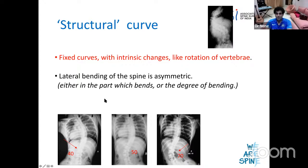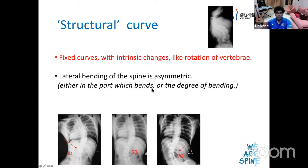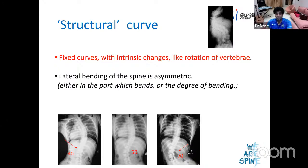Coming to some definitions. The culprit curve is called the structural curve. A structural curve is a curve that has a permanent change — it does not straighten on bending. It will have some inherent or intrinsic changes like rotation, a flattening of the spinous process, or sometimes wedging of the vertebral body. Think of it as the curve that is really the culprit, while the other curves had to come into play to save the body from misaligning from the center of gravity.